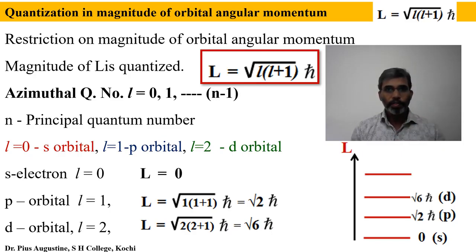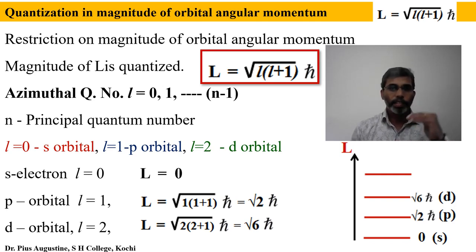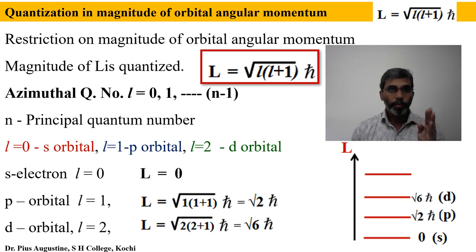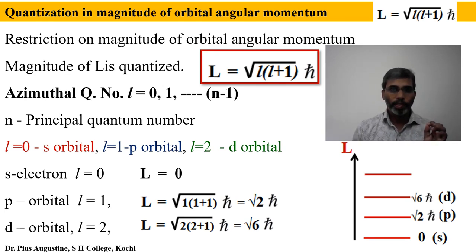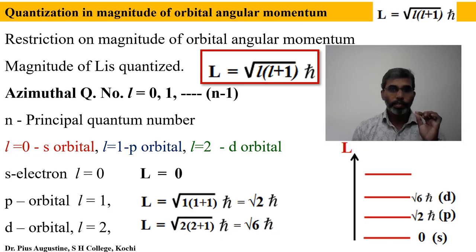If we plot the discrete values of orbital angular momentum for different kinds of electrons, we get a diagram showing discrete values: 0, √2 ħ, √6 ħ, and so on. This discrete nature is known as quantization of the magnitude of orbital angular momentum — the orbital angular momentum of electrons in an atom is allowed only certain values consistent with the equation L = √(l(l+1)) ħ, not a continuous range.